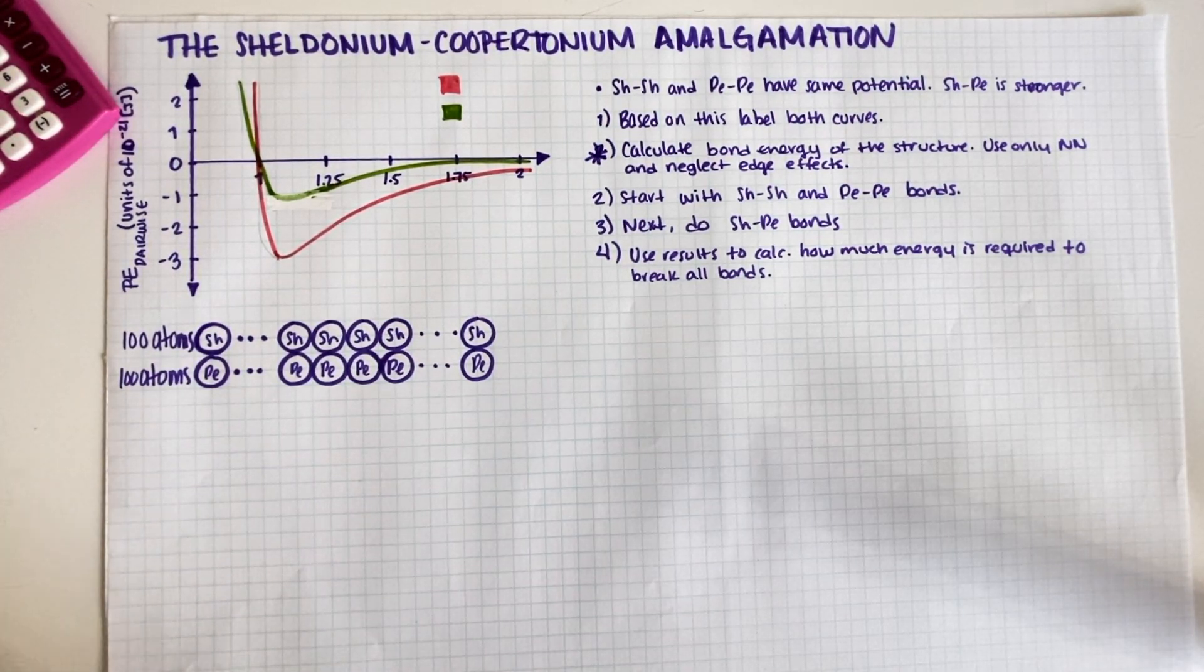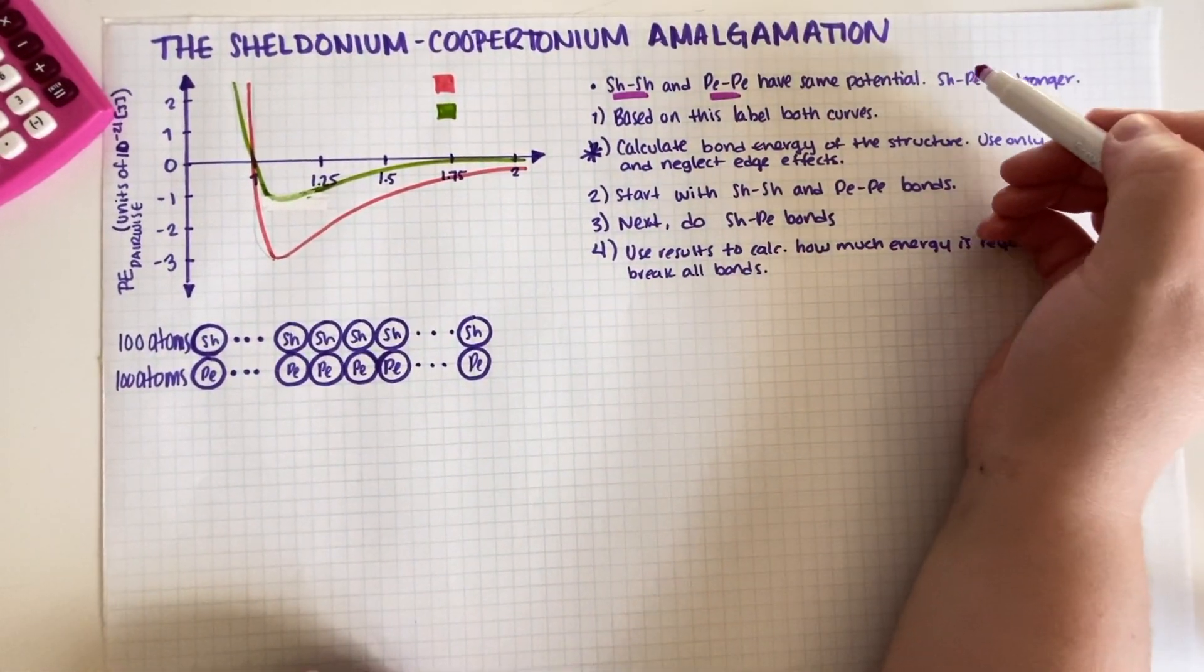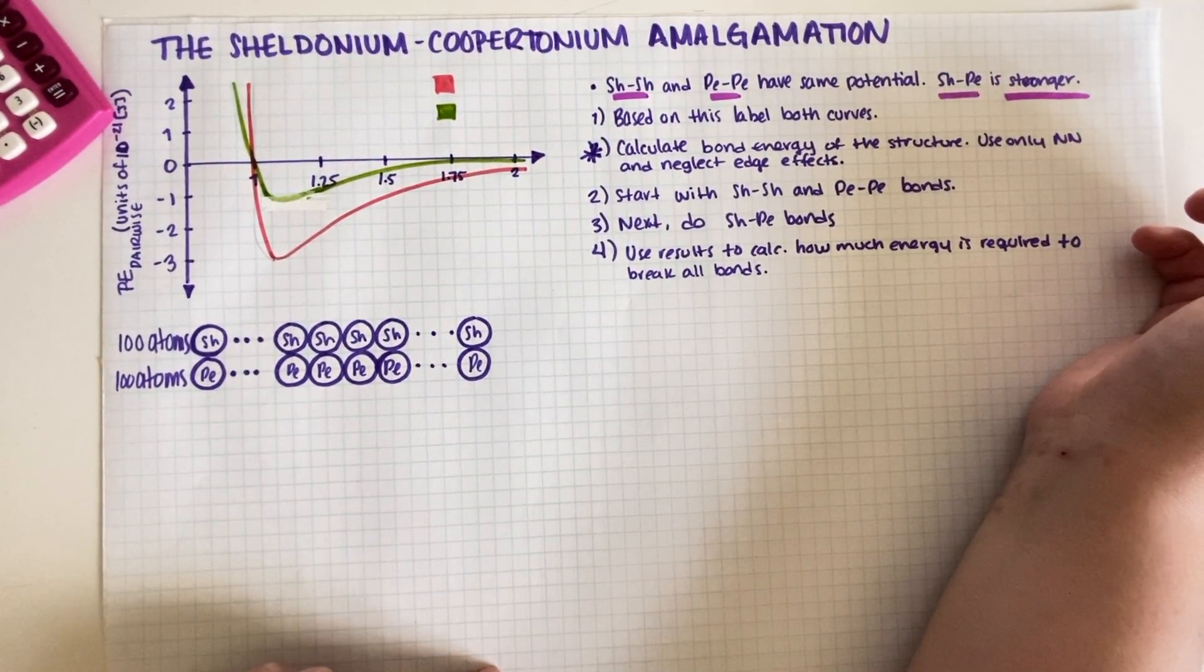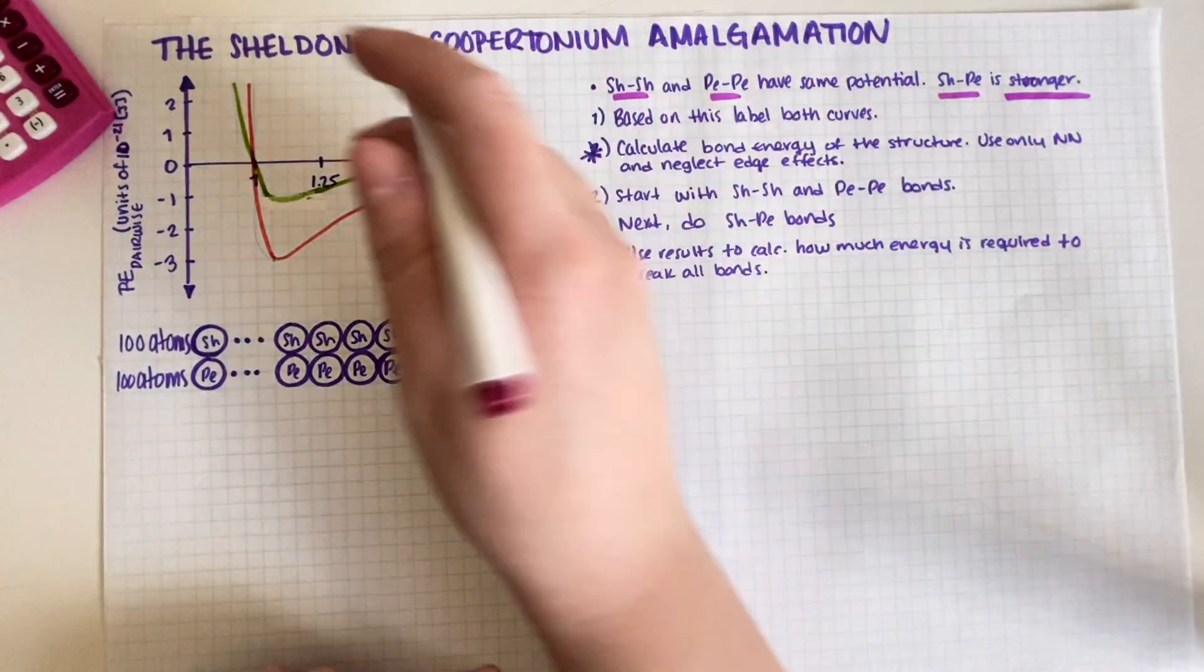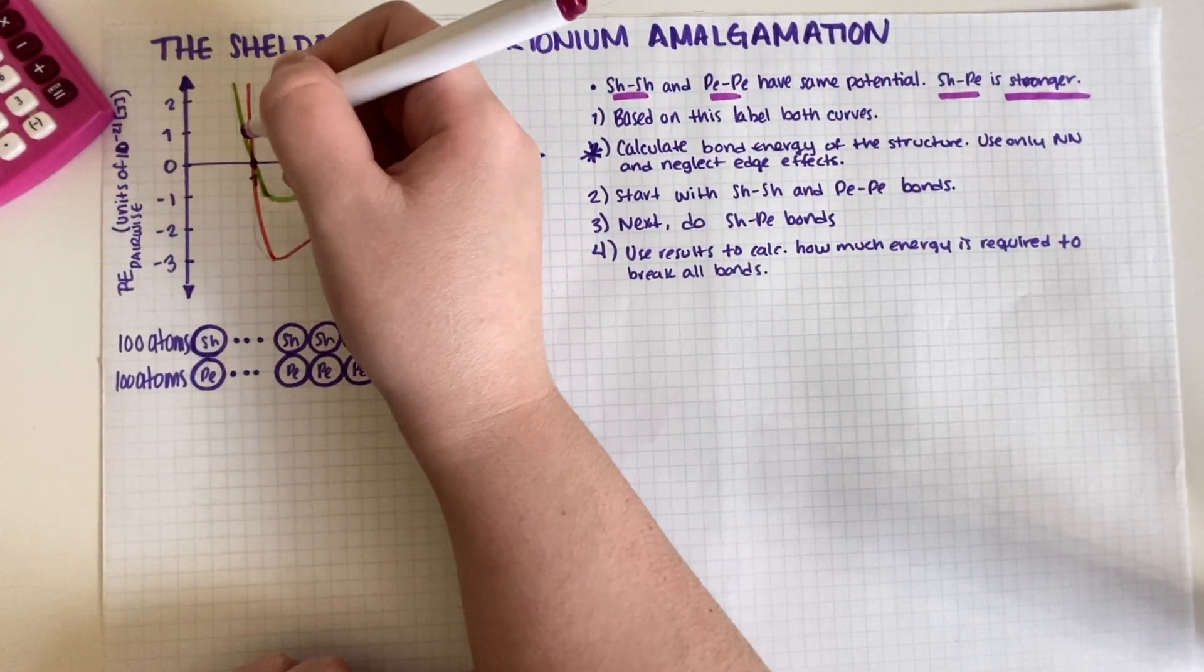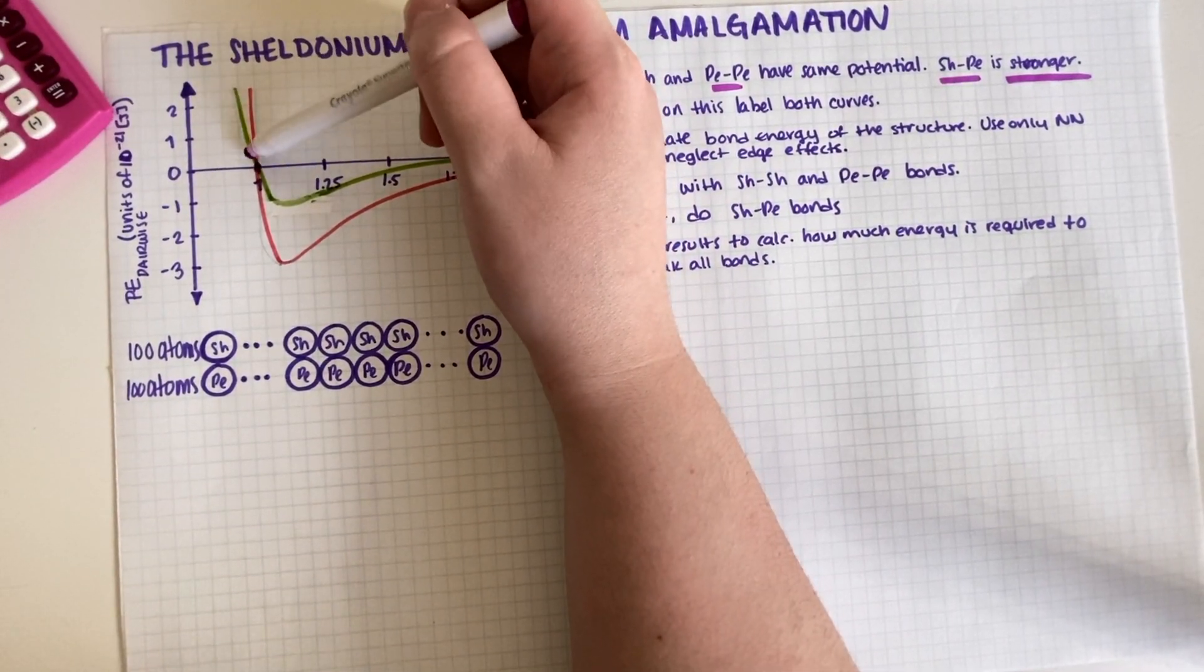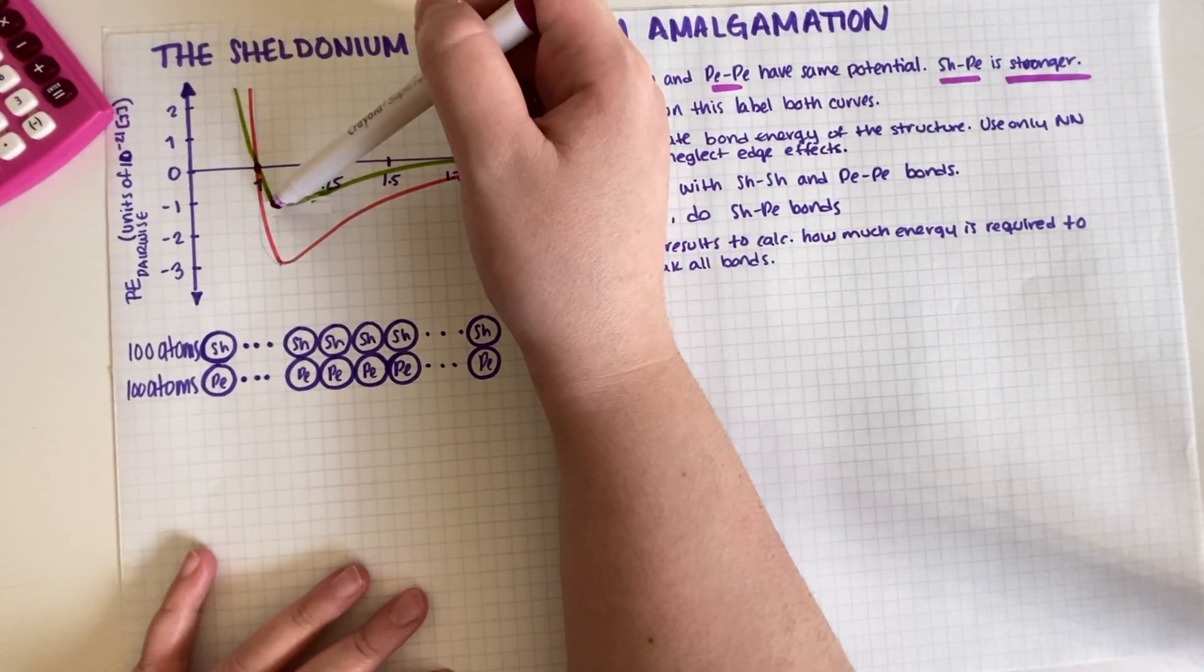Okay, so these two have the same potential. However, if you have one of each you have a stronger potential. So based on this, that's a pretty easy thing to answer because this one is—first of all, both Sheldonium and Coopertonium must have the exact same radius because they cross here at the same line.